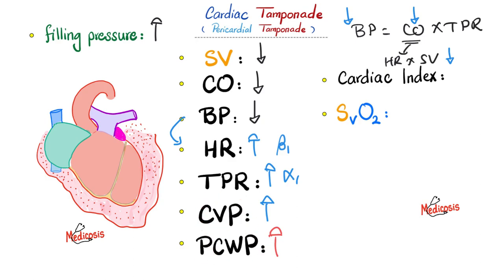Cardiac index is similar to cardiac output but more fair. If you compare my cardiac output to Michael Jordan's, his would be way higher — giving the illusion I have heart failure when in fact I do not. The difference is body surface area. If you divide each person's cardiac output by their body surface area, both have the same cardiac index. Since cardiac output decreases here and body surface area did not change, cardiac index will also decrease just like the cardiac output.